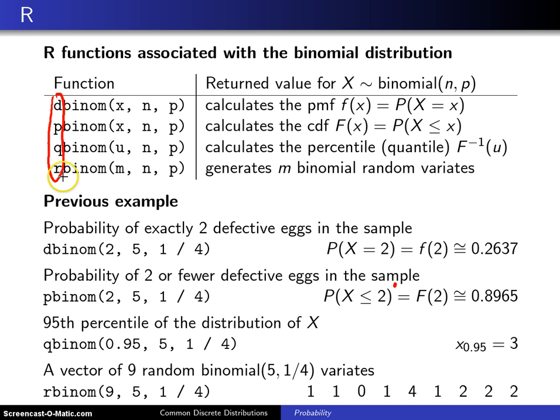Finally, the last illustration of these functions. If you say r binom m, n, p, and in this case r binom 9, 5, and 1 4th, this will conduct nine Bernoulli experiments of our five eggs sampled, each with a probability of defective of 1 4th. And so you can see we get a 0. One time we got no defectives. All the eggs were fine. And then on four occasions, we got one defective. On three occasions, we got two defectives. And then way out here, out in the tail, one time we happened to generate four bad eggs out of the five.